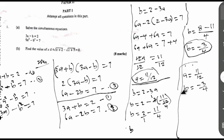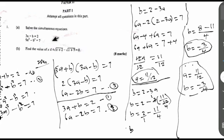So the solution to this problem — Question A — is: A equals 11 over 12, and B equals minus 3 over 4. That is the step-by-step approach to solving this kind of simultaneous equation. Don't forget to subscribe and like. In the next video, I will continue with the solution for Question B and the remaining 9 questions under this NECO GCE 2023 examination. Thank you, and don't forget to share this video.